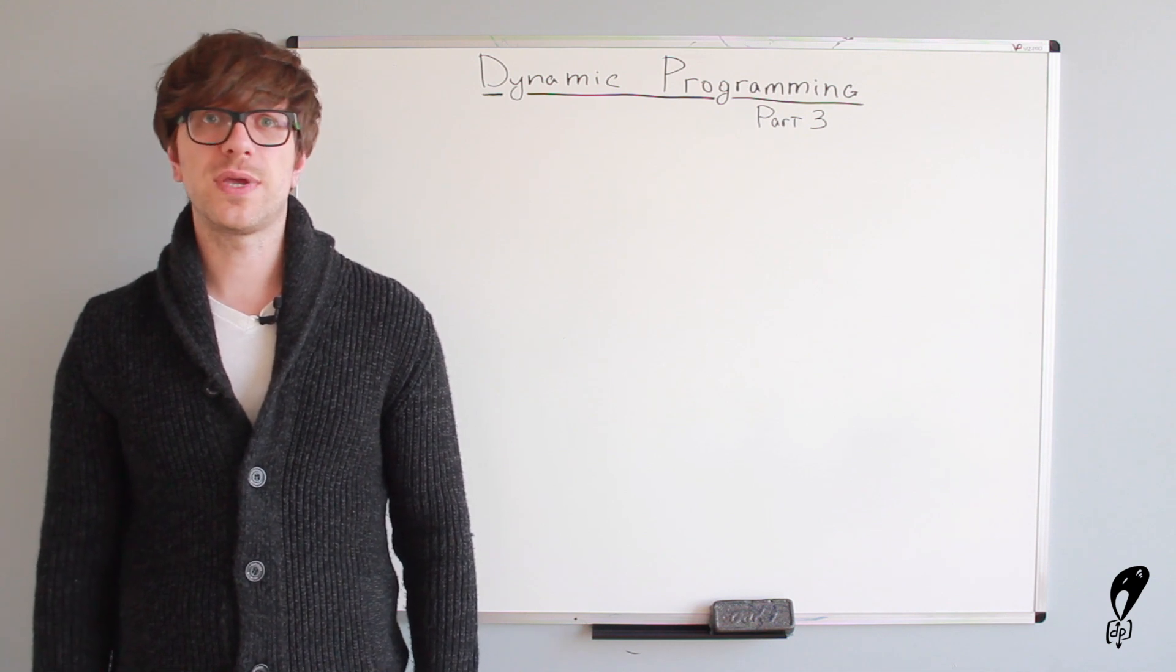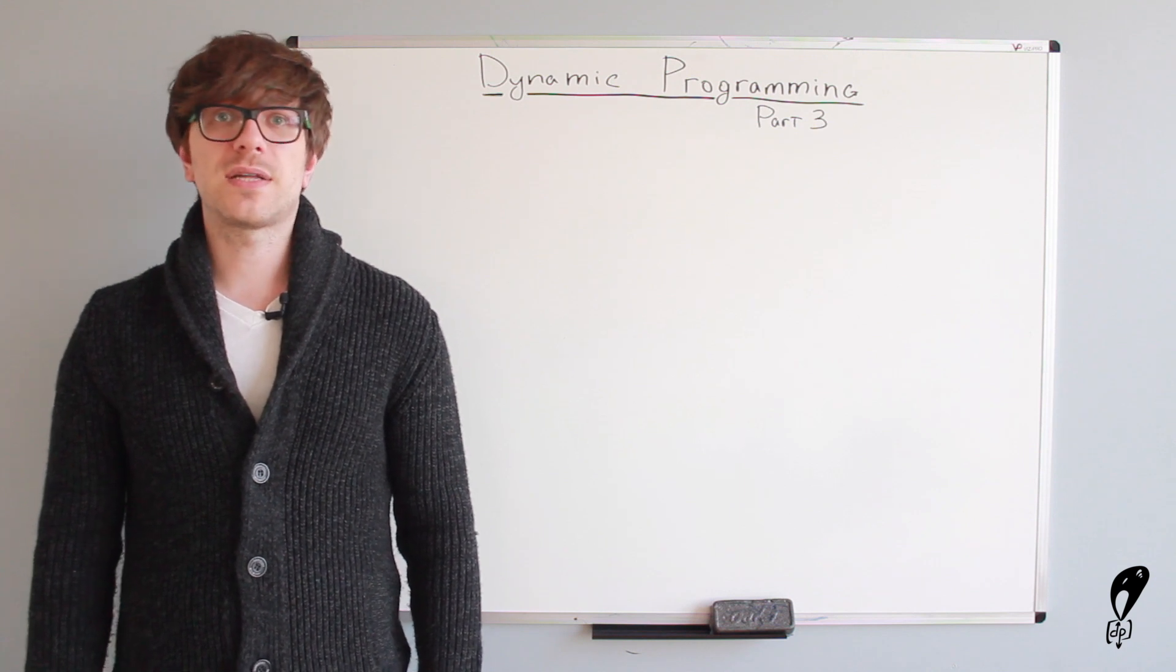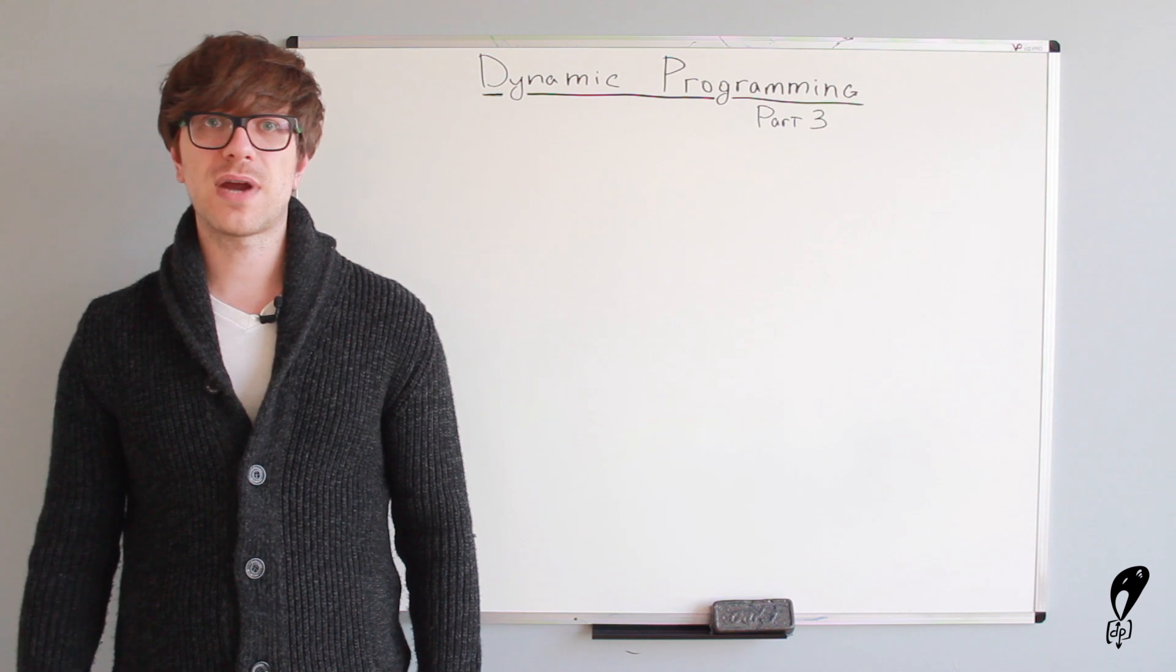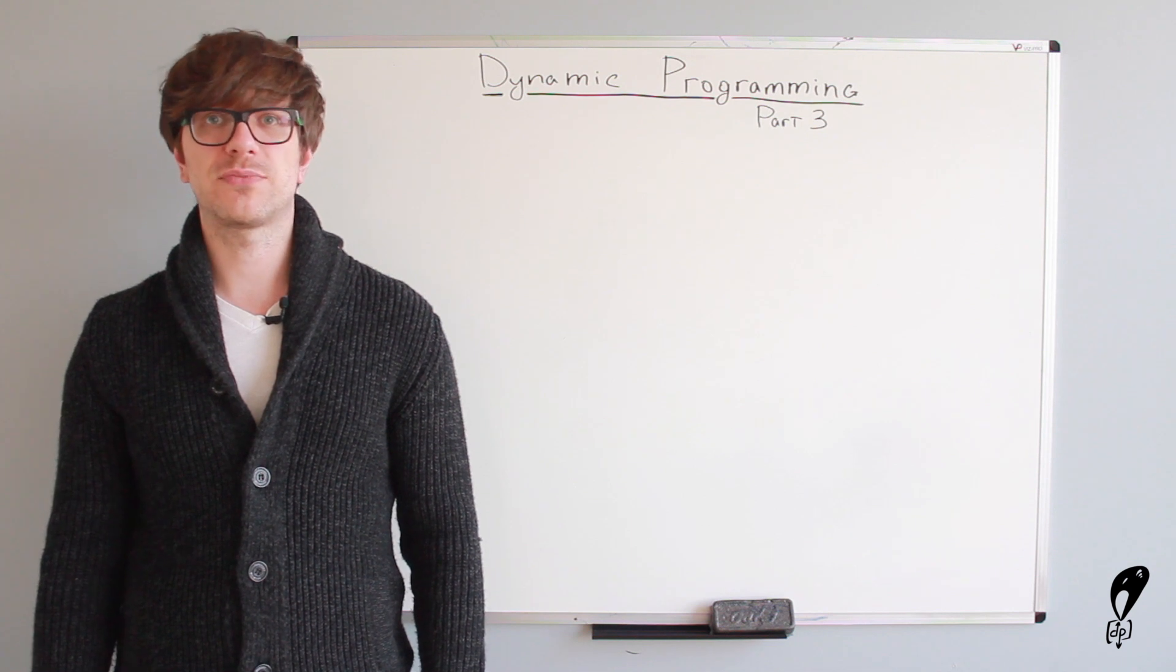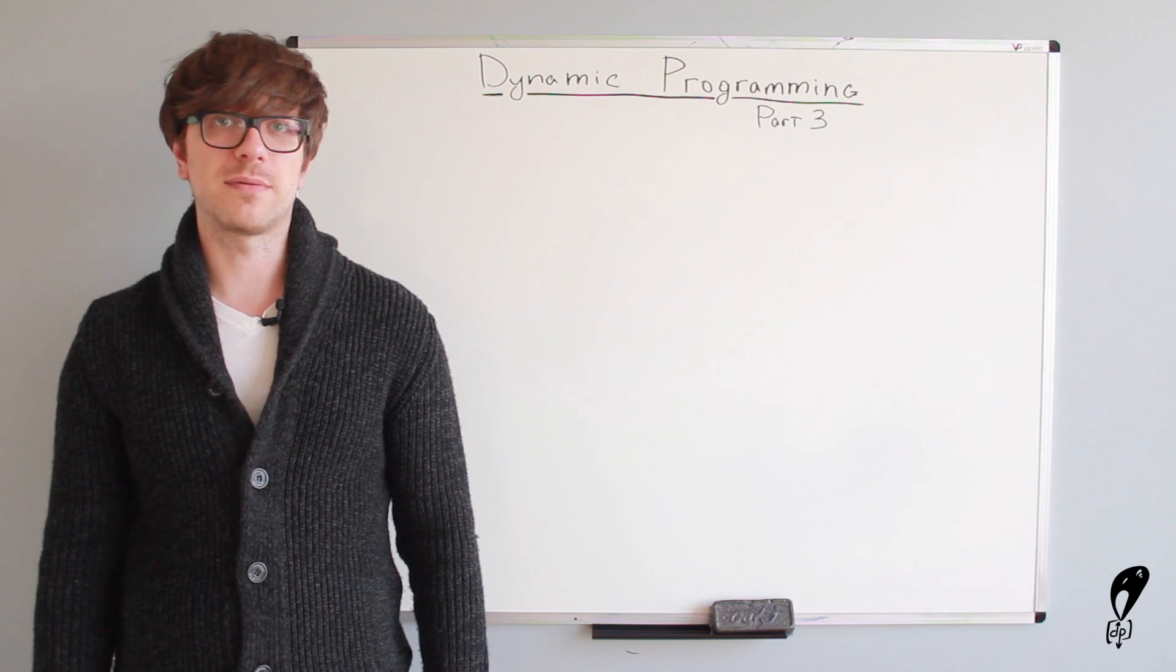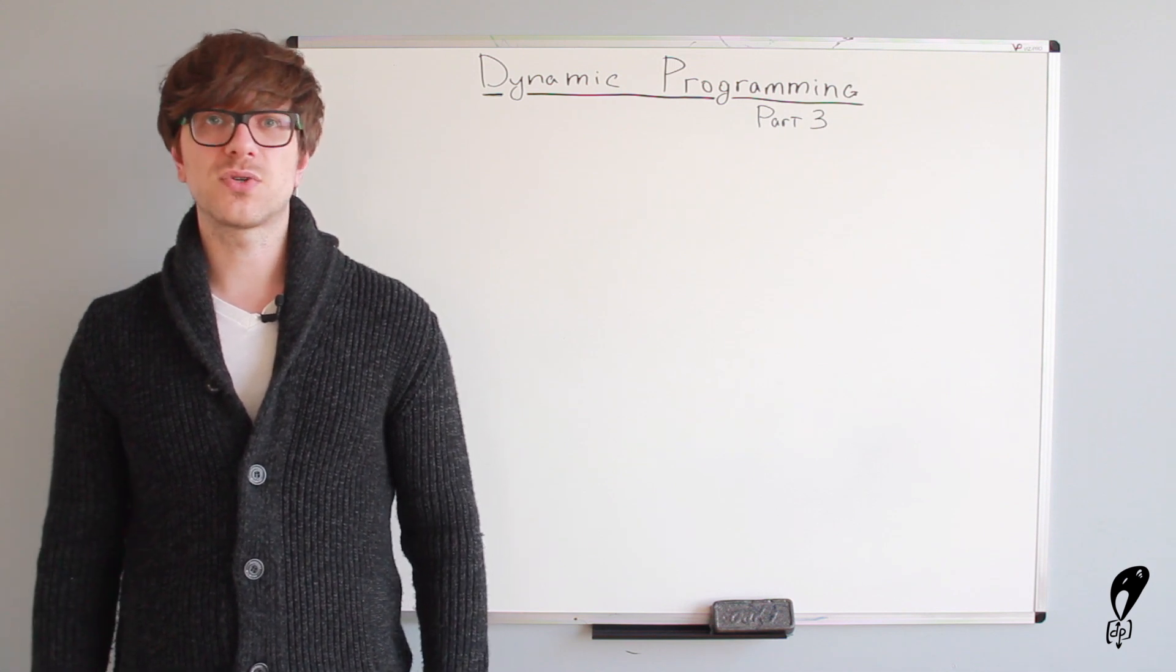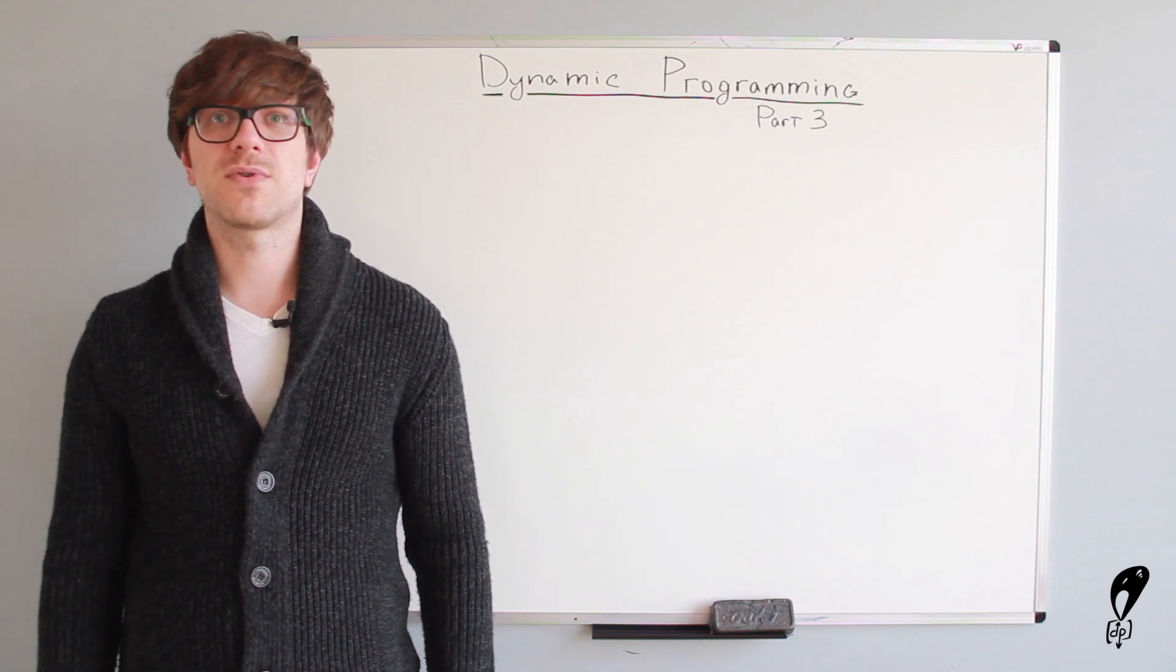In the previous lecture, we gave an abstract definition to what Dynamic Programming is, right? We said that Dynamic Programming is a technique that helps to solve a class of problems that have overlapping subproblems property and optimal substructure property. Optimal substructure means we can get optimal solution to the problem by combining optimal solutions of its subproblems. And then, if we solve the same subproblems multiple times, it means overlapping subproblems property is also present in the main problem.